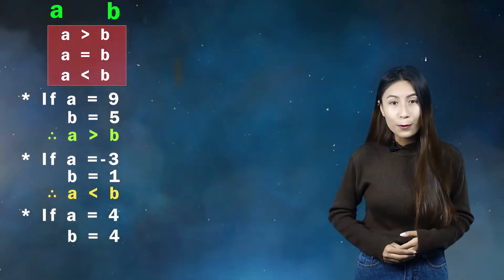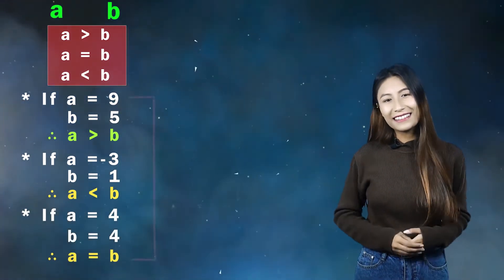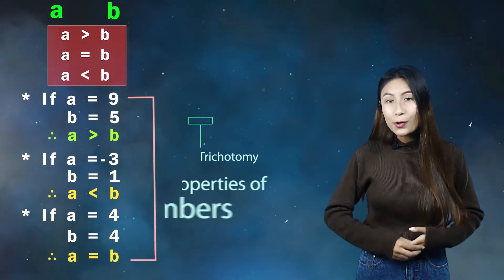This property is known as trichotomy properties of numbers, and the symbols less than, greater than, and is equal to are trichotomy symbols.